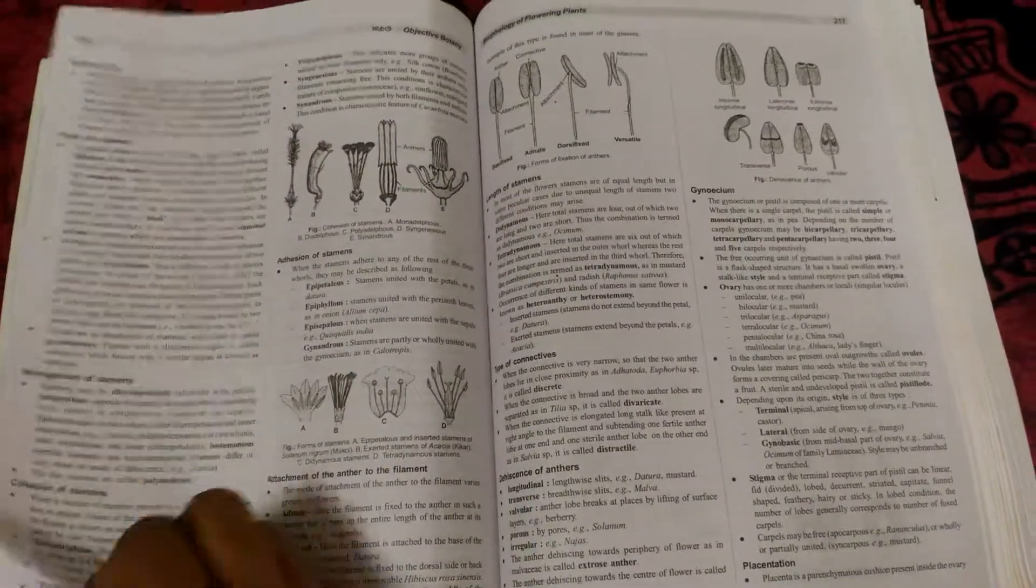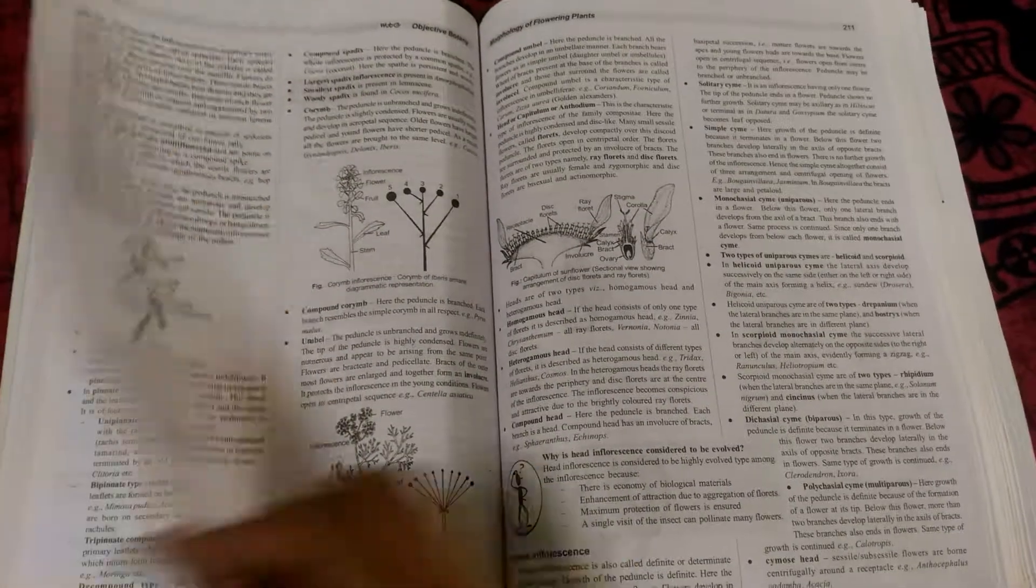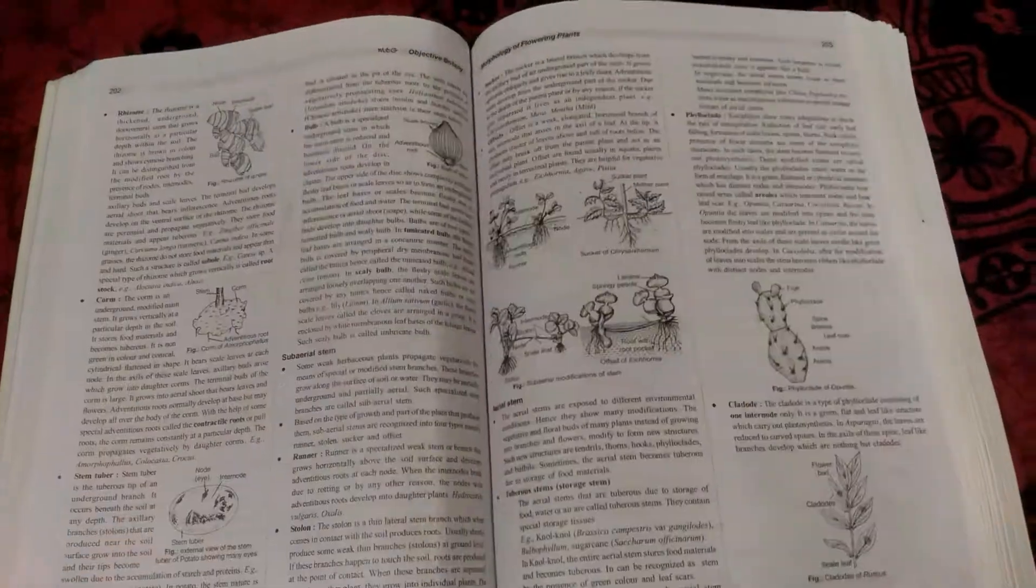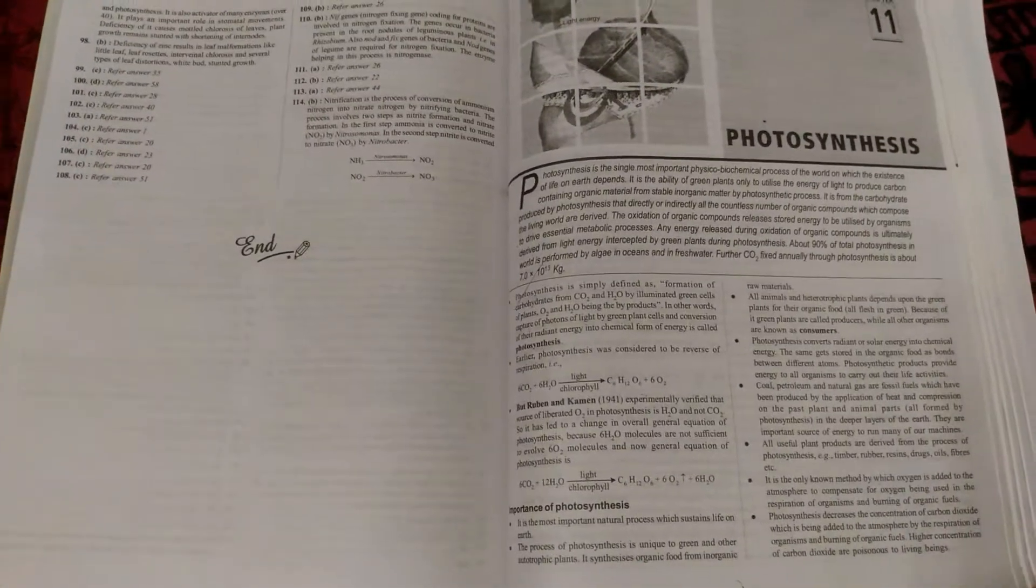Here you see the morphology of the flower in plants. One thing more: in this chapter, there is a brief discussion about the flower content, the inflorescence, lamina, leaf portions, etc. Here you see the tissue system of the plant and secondary growth of the dicot stem.